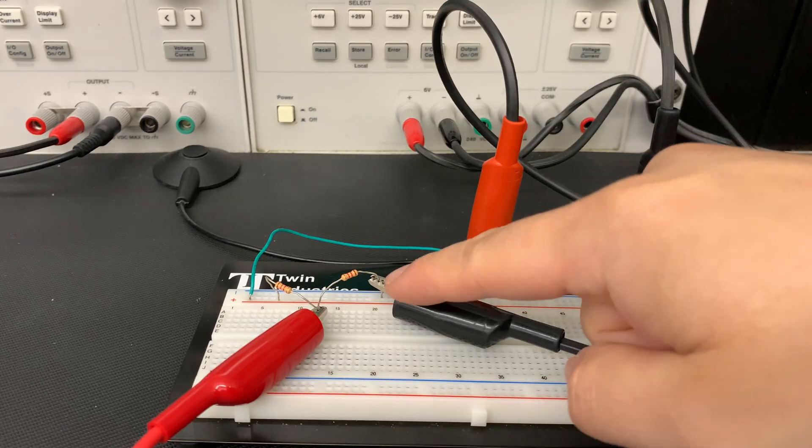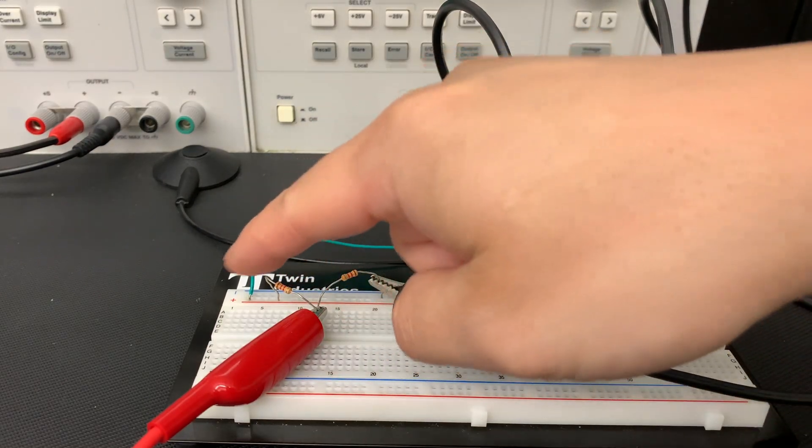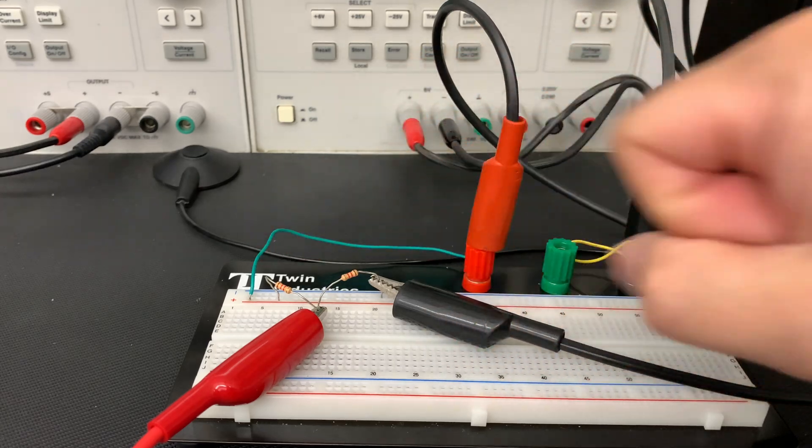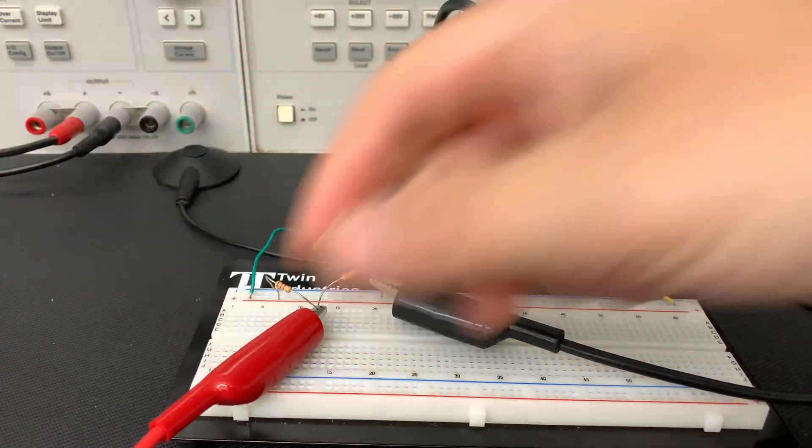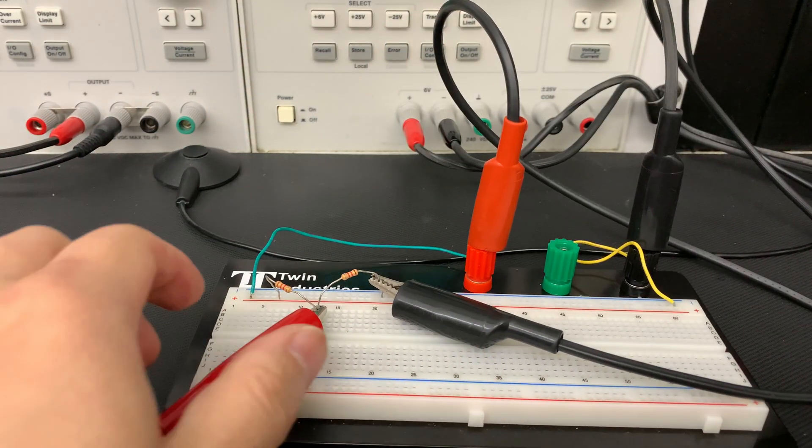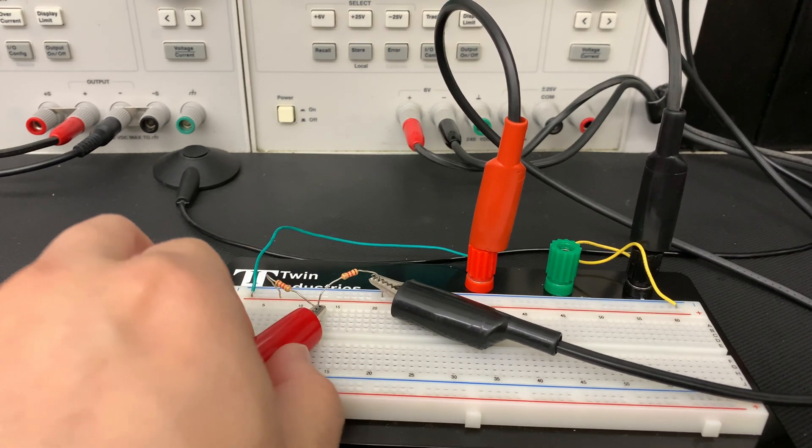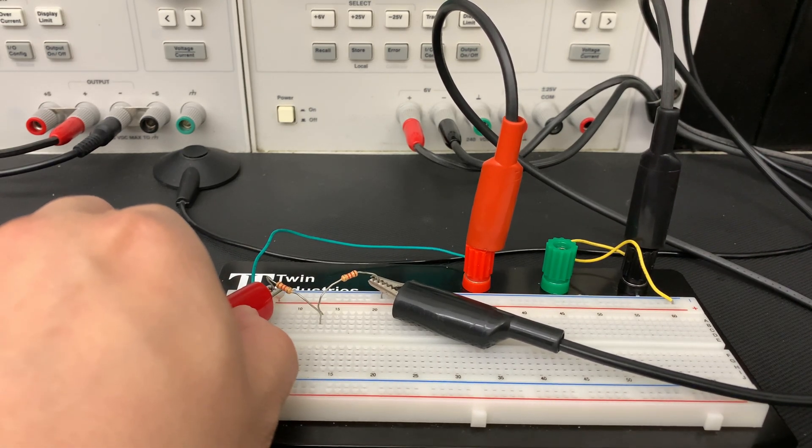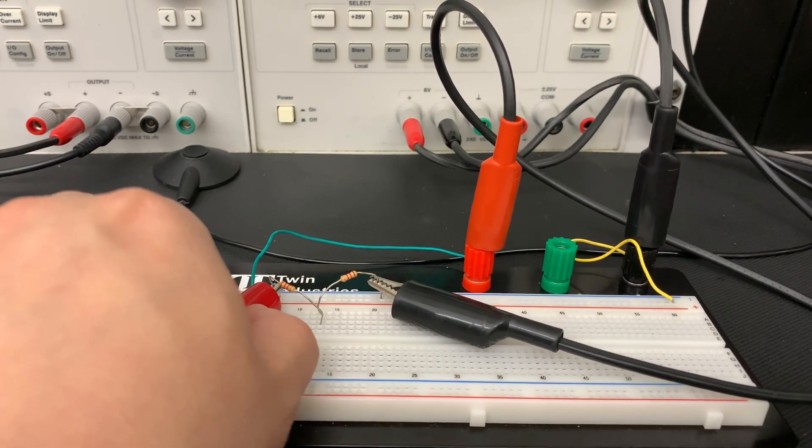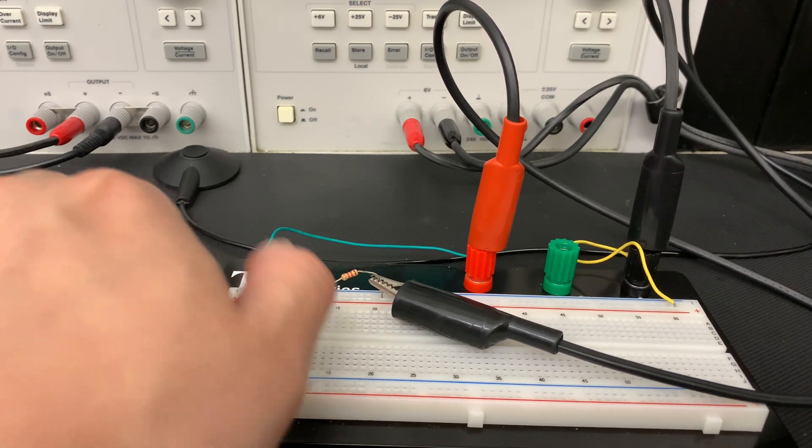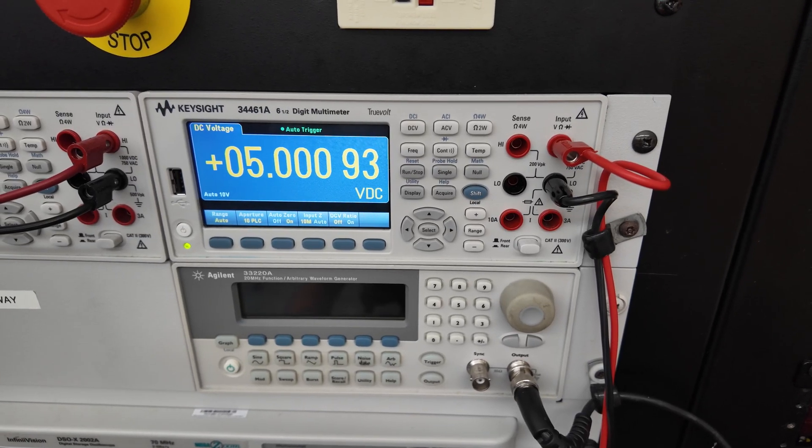If you want to measure the potential difference across the two resistors, we can always unclip this side, clip it onto the other side of the circuit, and now we get 5.0 as a measurement.